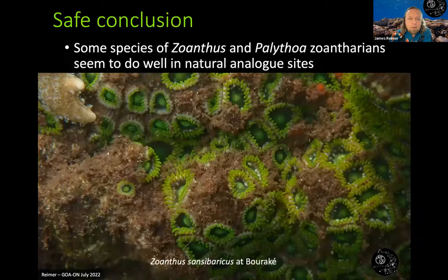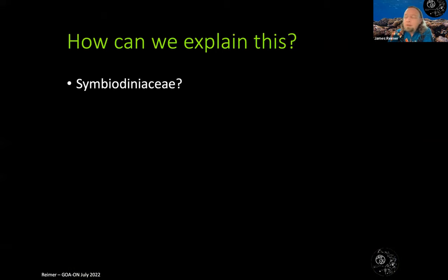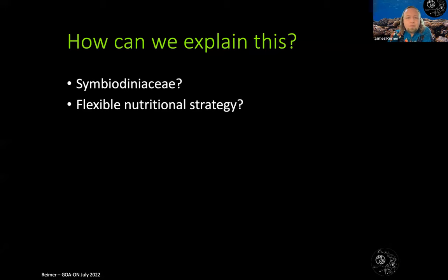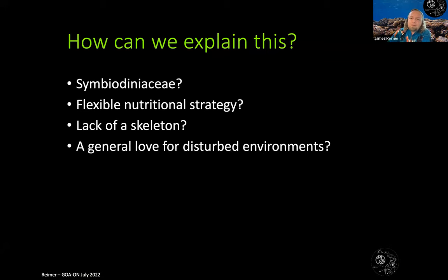Some species of Zoanthus and Palythoa seem to be doing well at natural analog sites. Why? How can we explain this? I can think of four things: first, possibly their endosymbionts — the Symbiodiniaceae — some characteristics of this group might be interesting. Second, I think they also have a flexible nutritional strategy — trophic plasticity. Third, they do not have a skeleton, which I think is important to discuss. And finally, I really think some of these species have a general love for disturbed environments — I think this is their strategy for surviving on coral reefs.